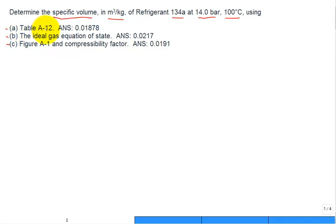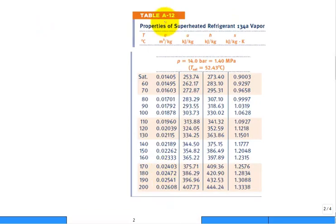For method A, go to table A12 where you have properties for the refrigerant. So let's do that first. So we go to table A12, properties for Refrigerant 134A.